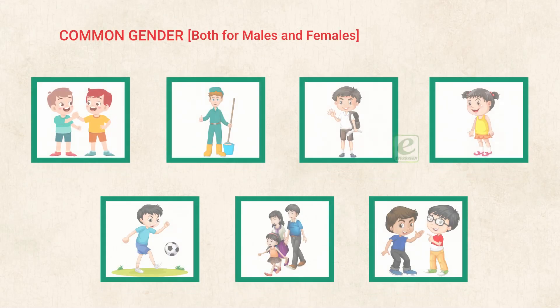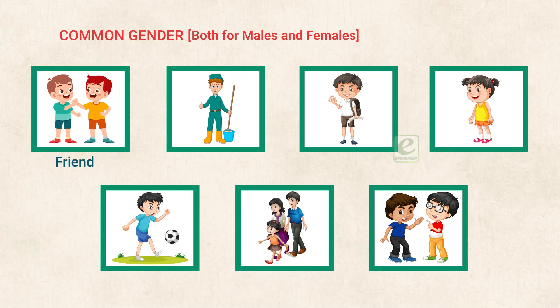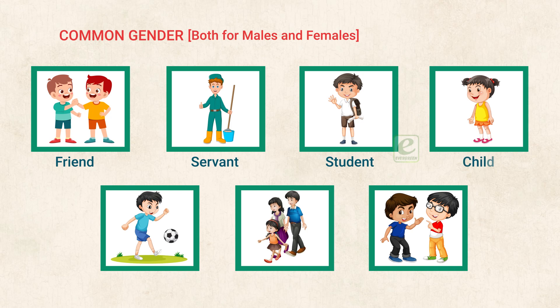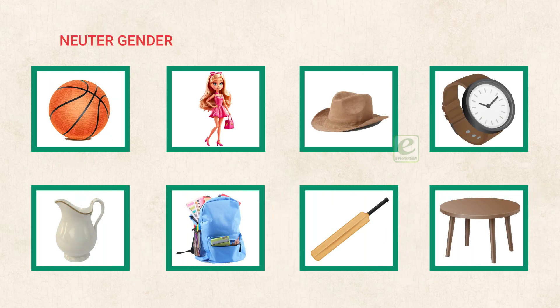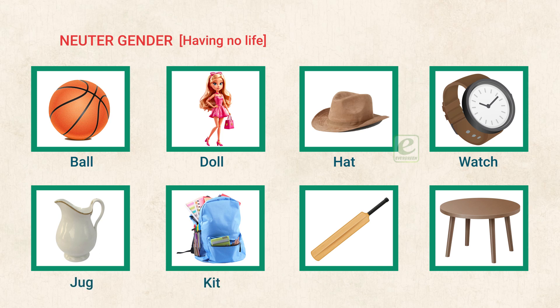Common gender — used for both males and females: Friend, Servant, Student, Child, Player, Parent, Cousin, etc. Neuter gender — having no life: Ball, Doll, Hat, Watch, Jug, Kit, Bat, Table.